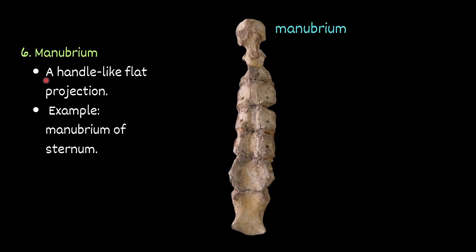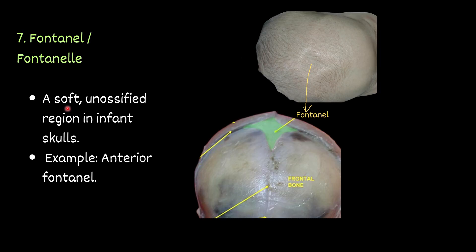Manubrium — a handle-like flat projection. For example, the manubrium of the sternum. This structure is called the manubrium of the sternum — a handle-like flat projection. Then fontanelle — a soft, un-ossified region in the infant skull. For example, the anterior fontanelle. You can see this area; in this area the bone is un-ossified, very soft. This is called your fontanelle — a soft, un-ossified region in the infant skull.